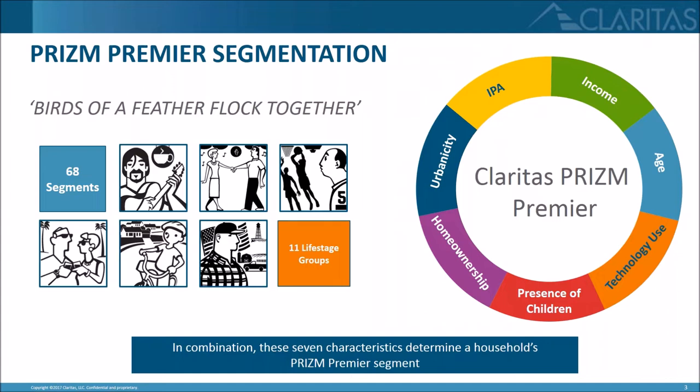We have seven core drivers that feed into this model. If you look over on the right-hand side of the screen, our first driver is household income. Then we have age, technology use, presence of a child in a household, homeownership, urbanicity, and IPA.